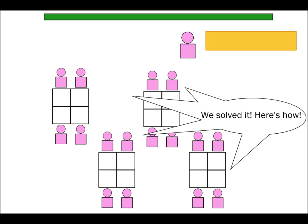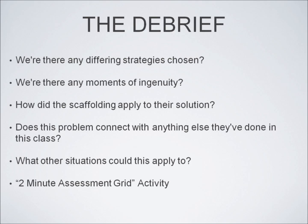Five, the solution. So the students should arrive at a solution or get assistance from those who have. Now the teacher facilitates the debrief process. Were there any different strategies chosen? Were there any moments of ingenuity? How did the scaffolding apply to their solution? Does this problem connect with anything else they've done in this class? What other situations could this apply to?